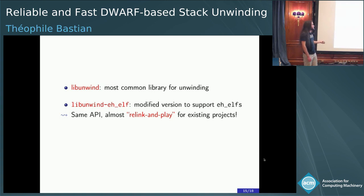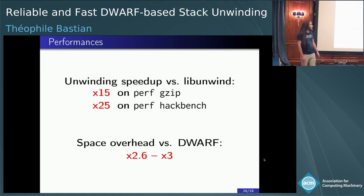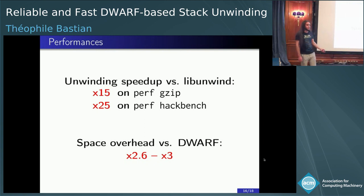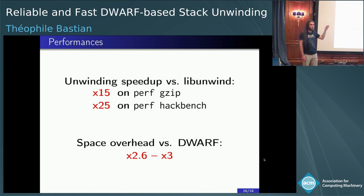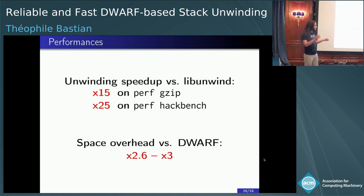What's our gain in performance? Actually it's quite good: 15 times the performance on gzip and 25 times on Hackbench — a tool used to stress test the Linux kernel scheduler. To emphasize: we don't get 15 times better performance on the overall Perf report, just on the unwinding time in Perf, which is about 60% of the total time. So it's quite a great improvement. Of course, you don't get that for free — DWARF was designed to be compact, and we have something between 2.5 and 3 times bigger data, which is still reasonable for heavy profiling.